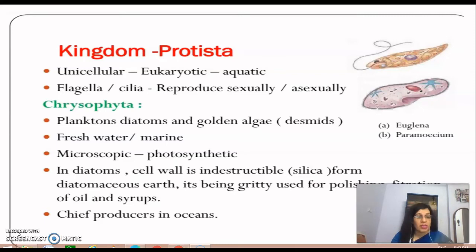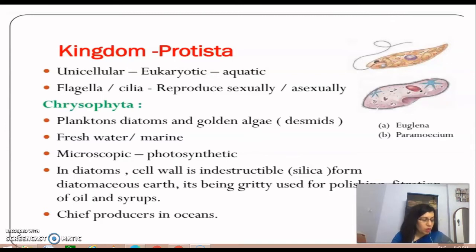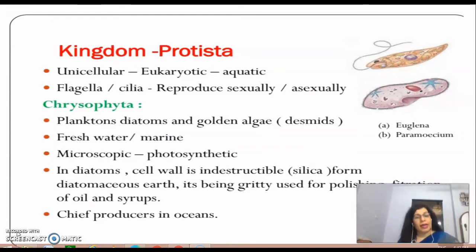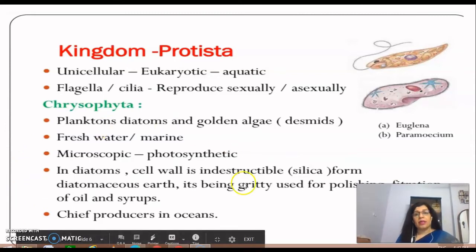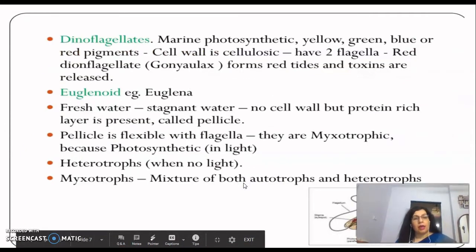The cell walls of diatoms are indestructible. Even after the organism is gone, the cell wall accumulates. This accumulated form is known as diatomaceous earth, which is gritty in texture. It is used in the filtration of oil and syrups. Diatoms are also the chief producers in the oceans — this is a commonly asked exam question.